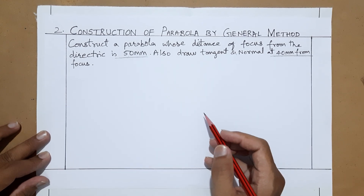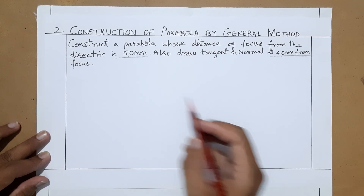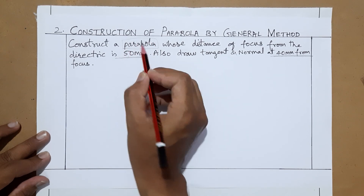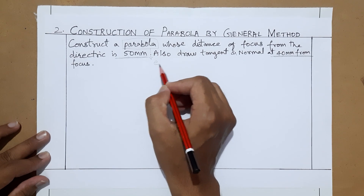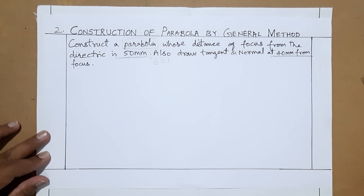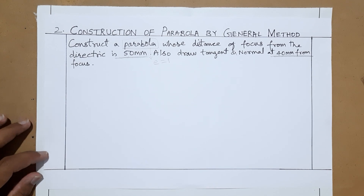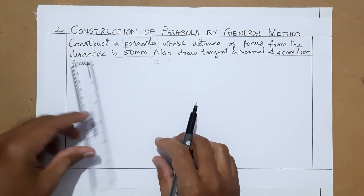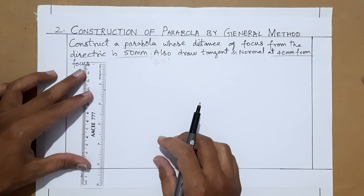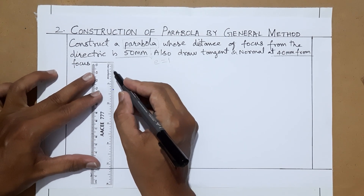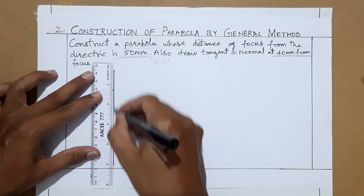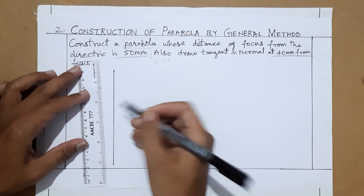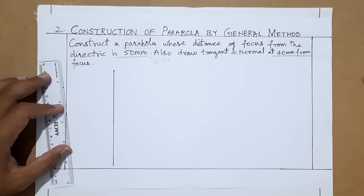Eccentricity is not given in this problem because for a parabola eccentricity is always one. So let us see how to start the problem. First you have to draw the directrix of any length.